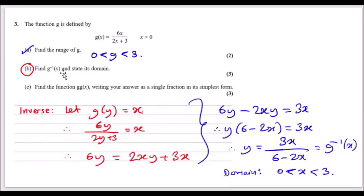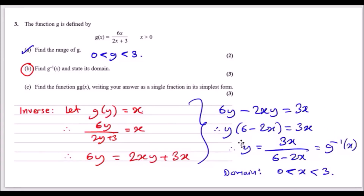For the inverse function: the domain of the inverse is always the same as the range of the original function, so the domain of g⁻¹ is between 0 and 3. To find the inverse, let g(y) = x, so 6y/(2y + 3) = x. Multiply both sides by (2y + 3): 6y = 2xy + 3x. Collect y terms on the left: 6y − 2xy = 3x, factorize to get y(6 − 2x) = 3x, so g⁻¹(x) = 3x/(6 − 2x).